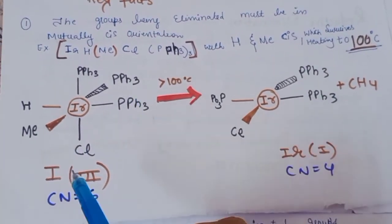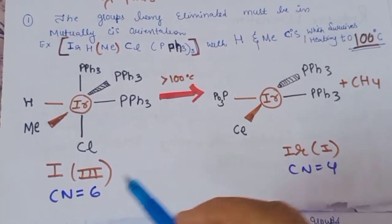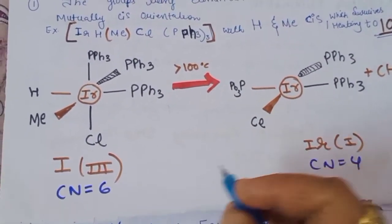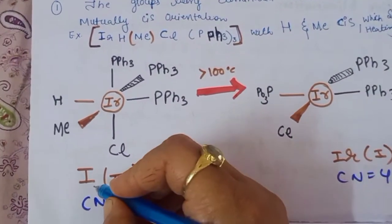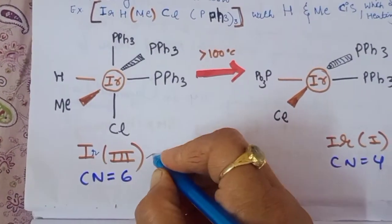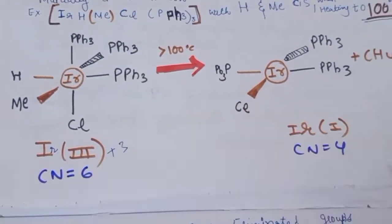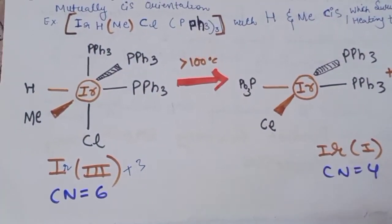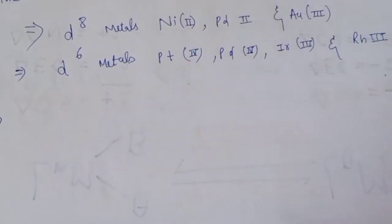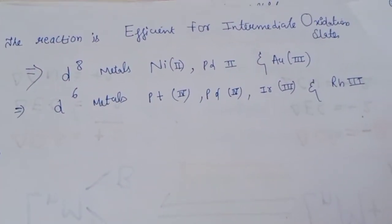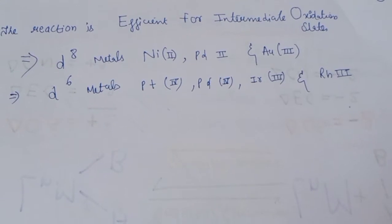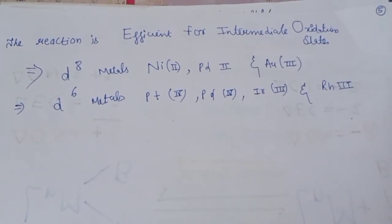The elimination of methane occurs at 100°C. The coordination number was 6, and it is reduced to 4. Iridium in the +3 oxidation state is reduced to the +1 oxidation state.